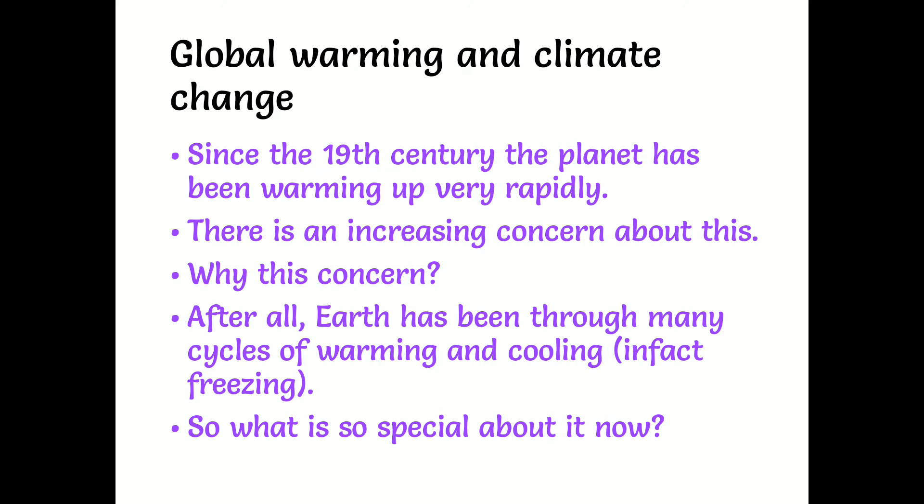Earlier cycles of cooling and warming happened over very long periods of time, which allowed much of the life on earth to adapt to the changes. The problem now is that the heating is much more rapid and could lead to catastrophic climate changes. Much of the warming occurring since the Industrial Revolution is because of human activities — because a lot of pollutant agents were released by industries, causing a lot of global warming.